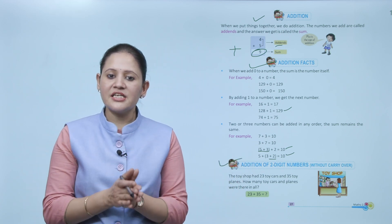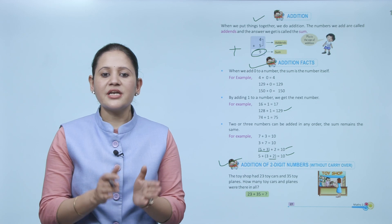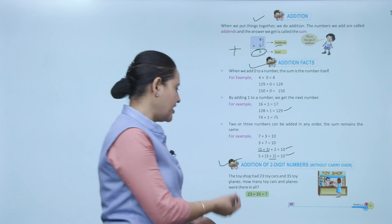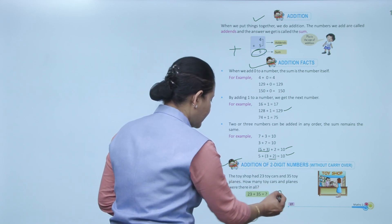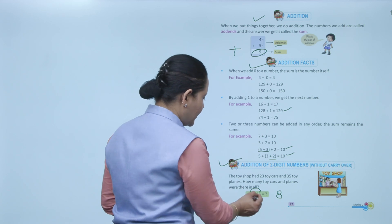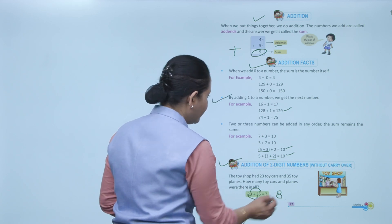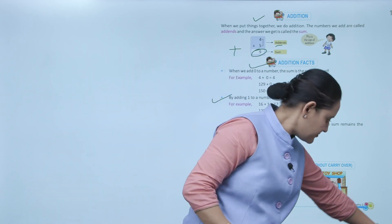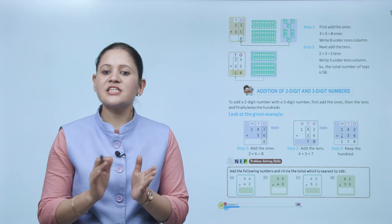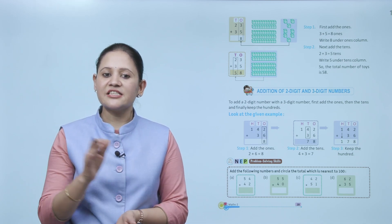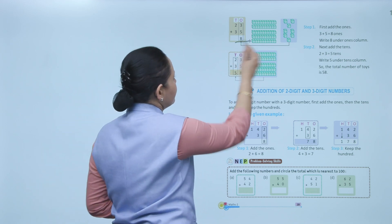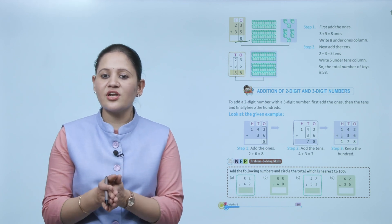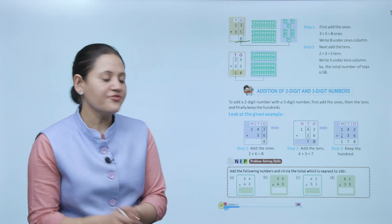Addition of two-digit numbers without carryover: The toy shop had 23 toy cars and 35 toy planes. How many toys were there in all? We add 23 plus 35. Step 1: add the ones — 3 plus 5 is 8, write 8 under ones column. Step 2: add the tens — 2 plus 3 is 5, write 5 under tens column. Total toys: 58.